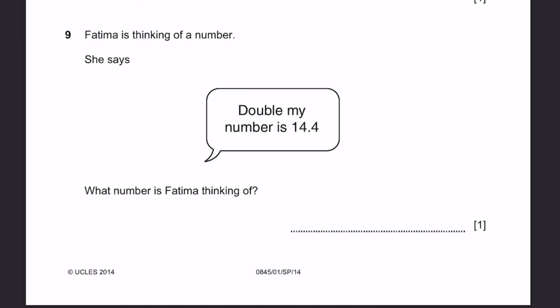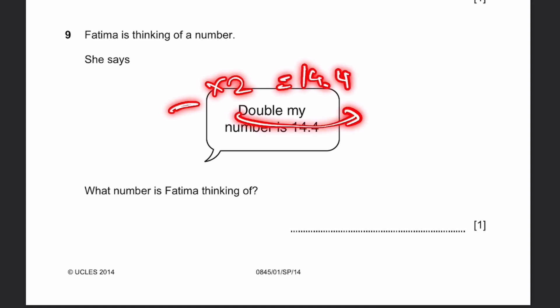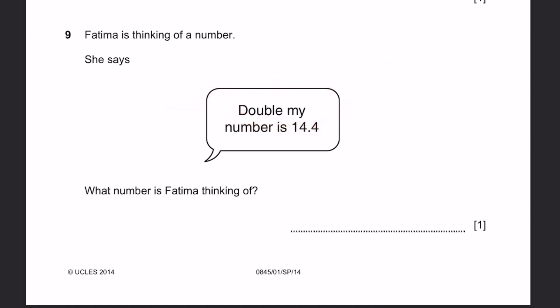Question 9. Fatima is thinking of a number. She says: double my number is 14.4. What number is Fatima thinking of? When we take a number and multiply it by 2, we get 14.4, so we divide by 2. That number is 14.4 divided by 2, which is 7.2.